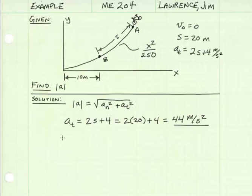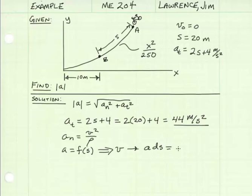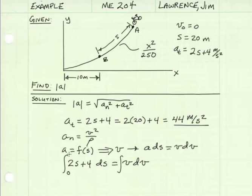To find our normal acceleration, we need the velocity squared divided by the radius of curvature. Our acceleration is a function of position, so in order to find velocity we need to use a·ds = v·dv. Substituting in our acceleration equation, we get 2s plus 4 ds equals v dv. Integrating both sides, our initial position is 0, our final position is 20, our initial velocity is 0, and our final velocity V is what we're looking for.